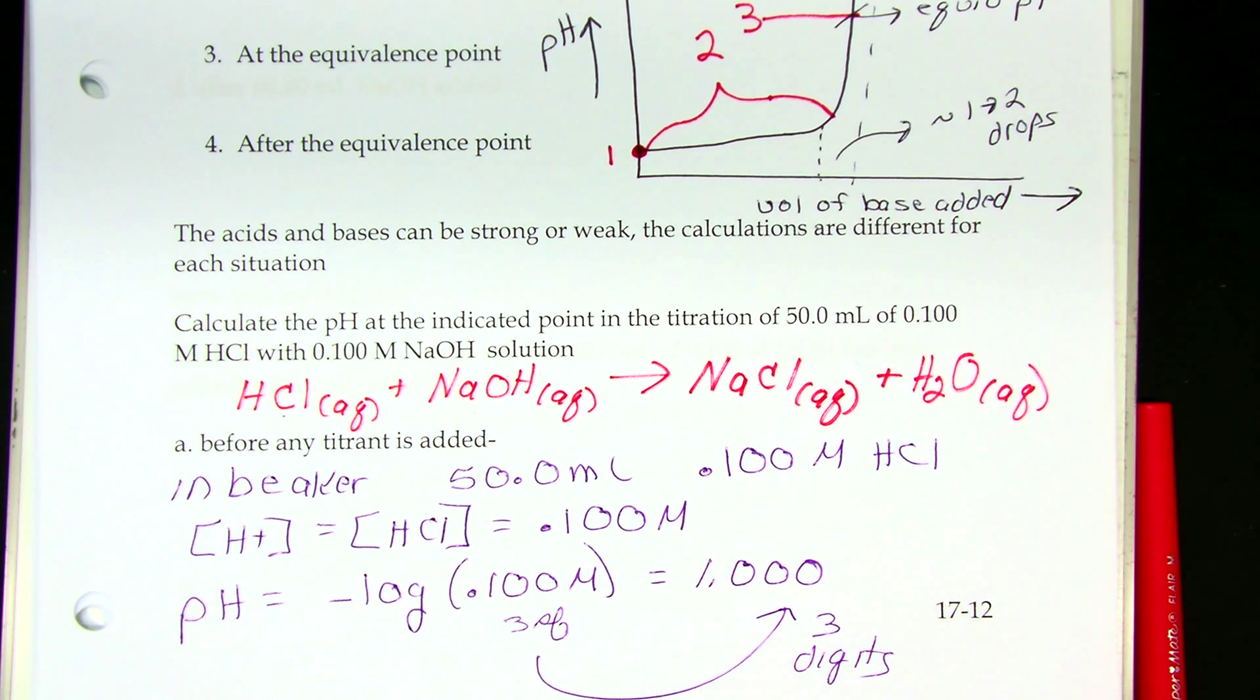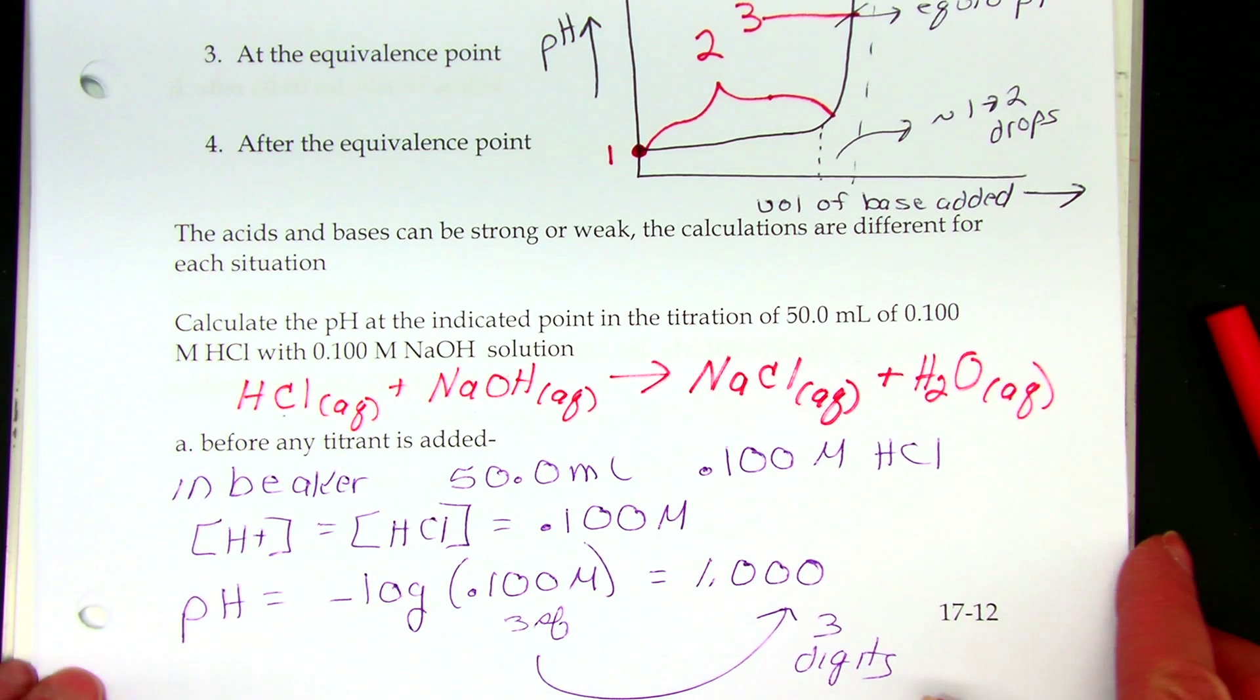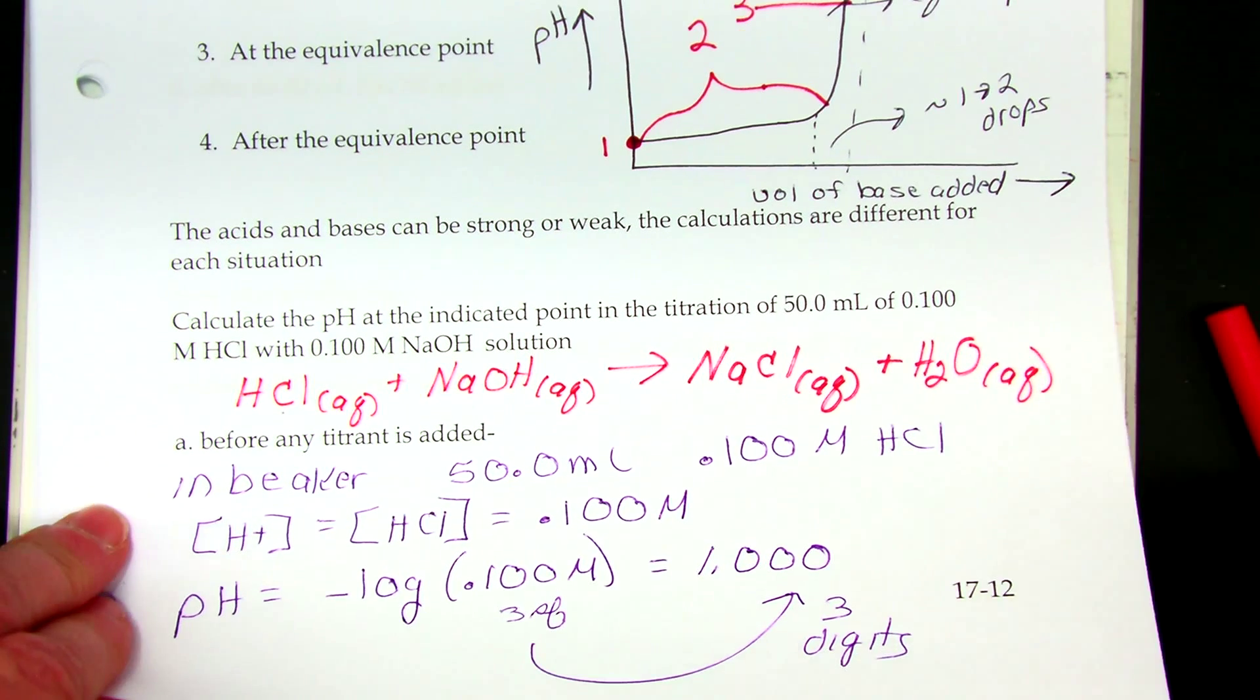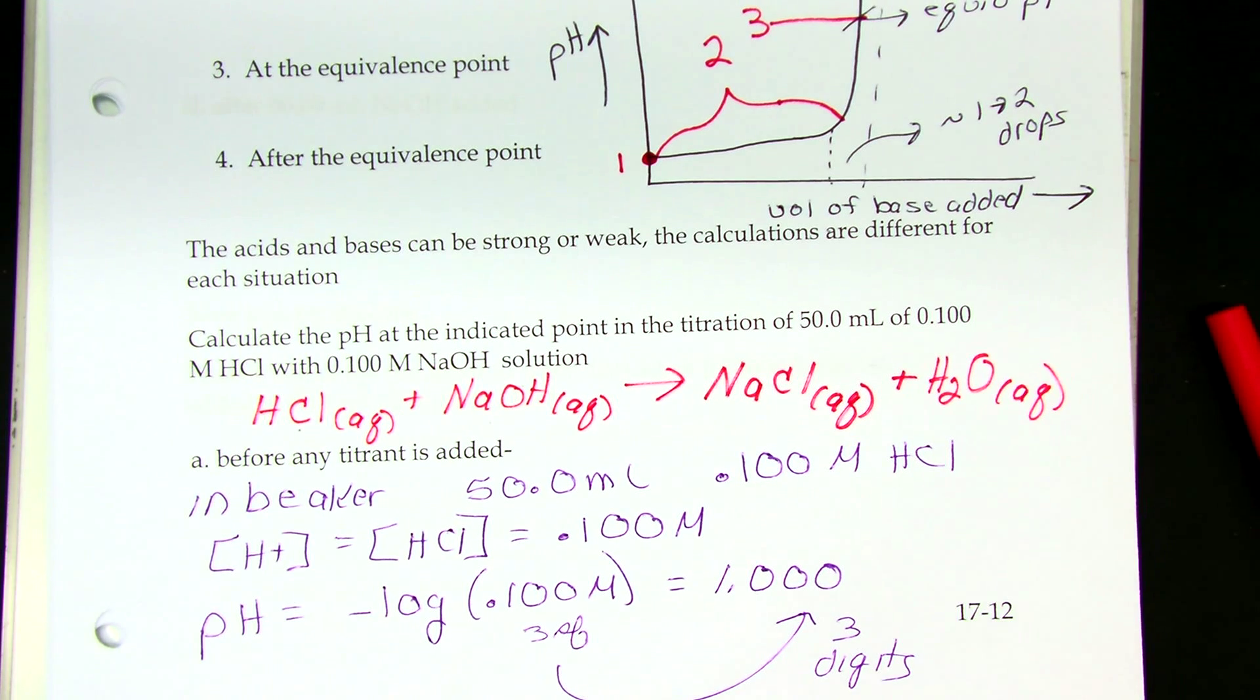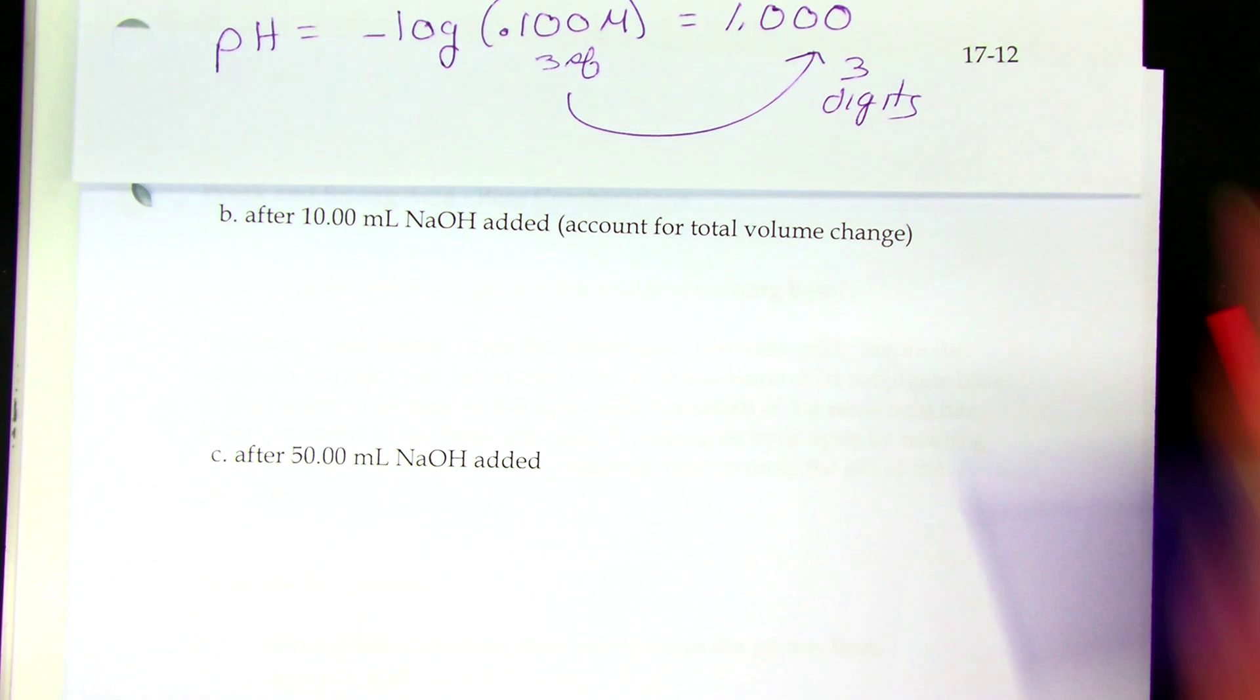I know we had a couple people asking about that. So all I've got in my beaker is HCl, and I can find the pH of a strong acid. We've been doing that since the beginning of chapter 16.